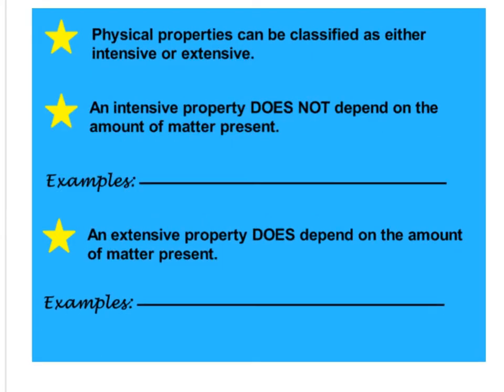Physical properties can then be classified as either intensive or extensive. An intensive property does not depend on how much matter you have. So this would be things like its melting point. It doesn't matter how much salt you have. Eventually, it's going to melt, right, at whatever melting point, it's like 1,600 degrees Celsius. Any kind of phase change would be an intensive property.